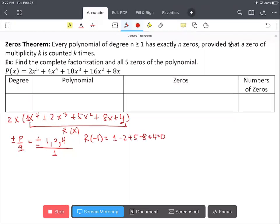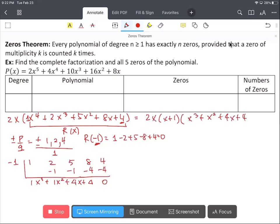this equals zero. This tells me that that's a factor of r of x. So I can find the remaining factor by applying synthetic division. One degree less from r of x will be x cubed plus x squared plus 4x plus 4. So we can say that the factor will be 2x times x plus 1 from the remainder theorem, and x cubed plus x squared plus 4x plus 4 from synthetic division.